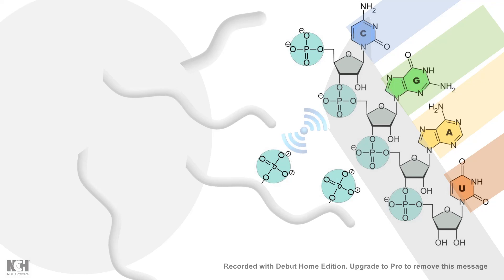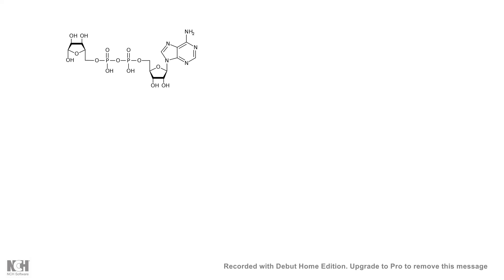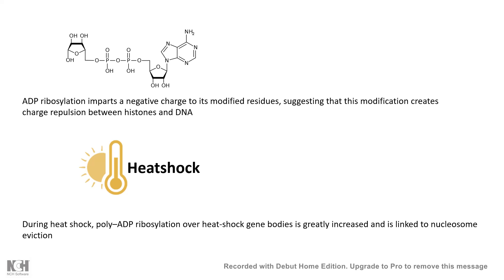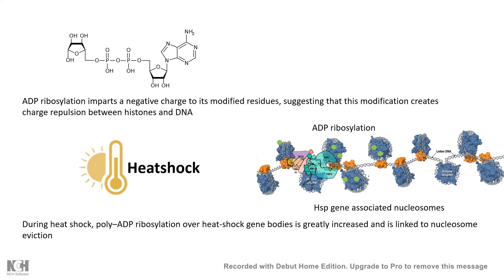Another type of modification is ADP-ribosylation, where an ADP-ribosyl group is added to the N-terminal tail of the histone. ADP-ribosylation is a common factor for heat shock genes — following a heat shock, ADP-ribosylation takes place in the nucleosomes in the region of heat shock genes, which loosens up the nucleosome and allows these genes to get transcribed. HSP genes are important for initiating the heat shock response.